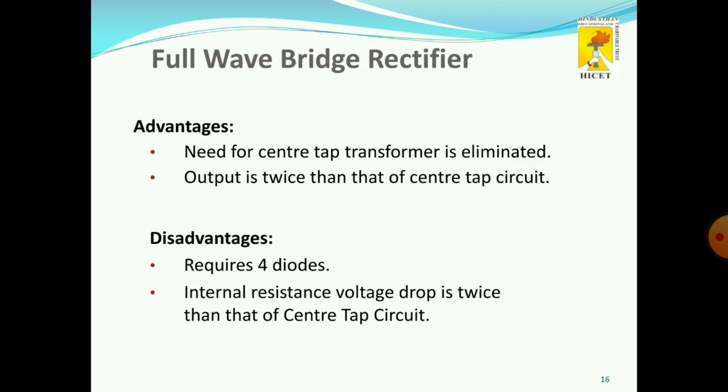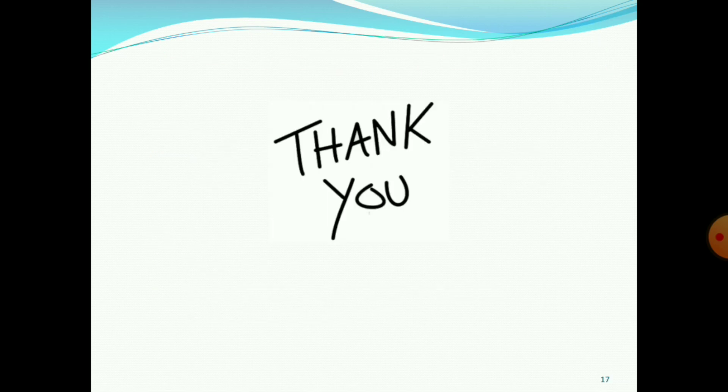The advantages of the full wave bridge rectifier are: it does not need a center tap transformer, so cost is reduced and the size is smaller. The output is twice that of the center tap transformer. The limitation of the bridge rectifier is that it requires 4 diodes, and the internal resistance voltage drop is twice that of a center tap transformer. Thank you.